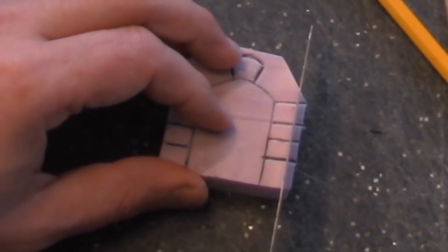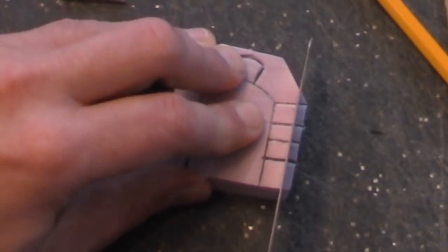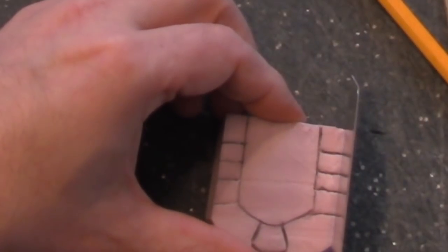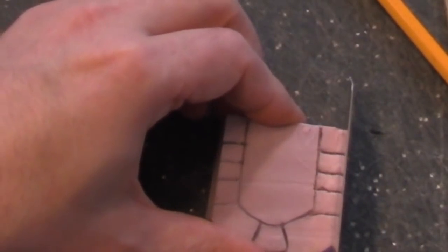The stones on the side look too rectangular, not square enough, so I just shave off some with my blade. And I'm careful to do it on both sides so they're symmetrical.